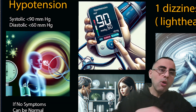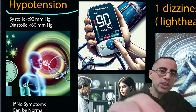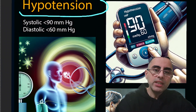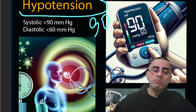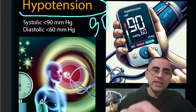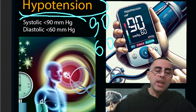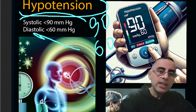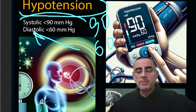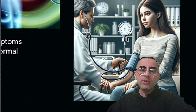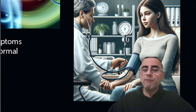Low blood pressure is called hypotension. Hypotension is diagnosed when the top measurement, called systolic blood pressure, is less than 90, and the bottom measurement, called diastolic blood pressure, is less than 60.